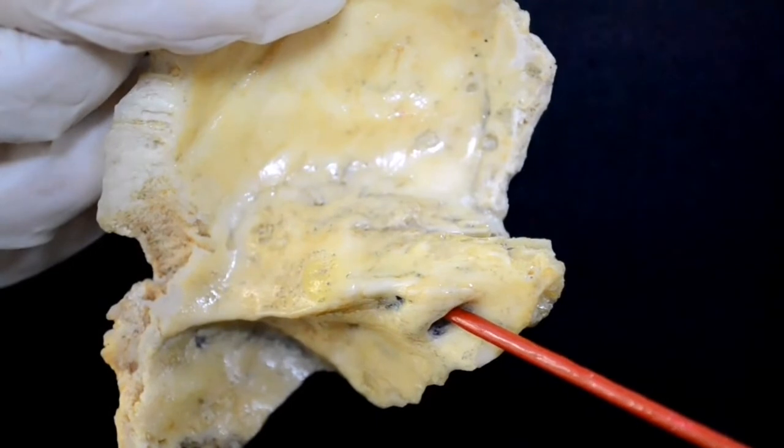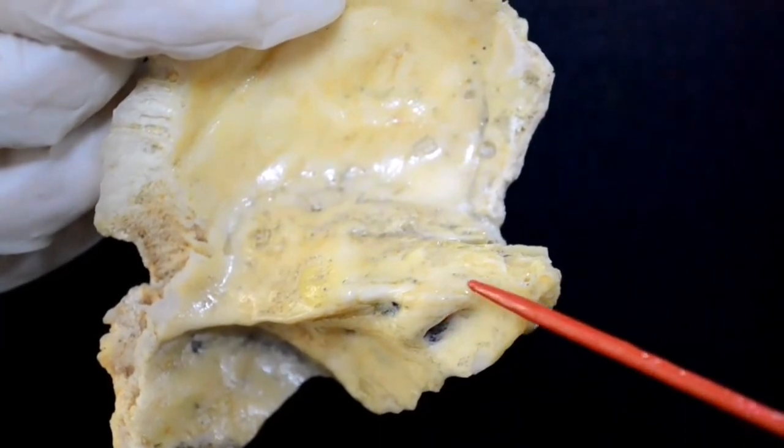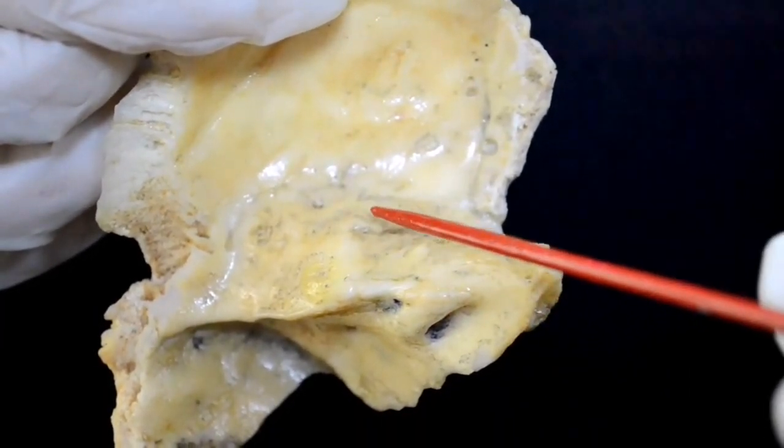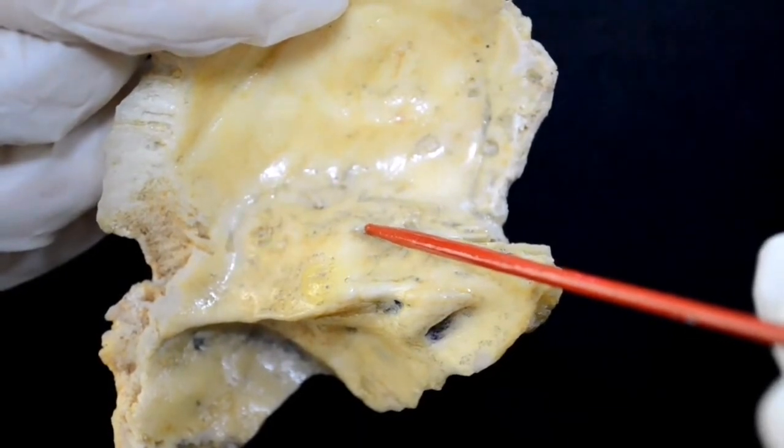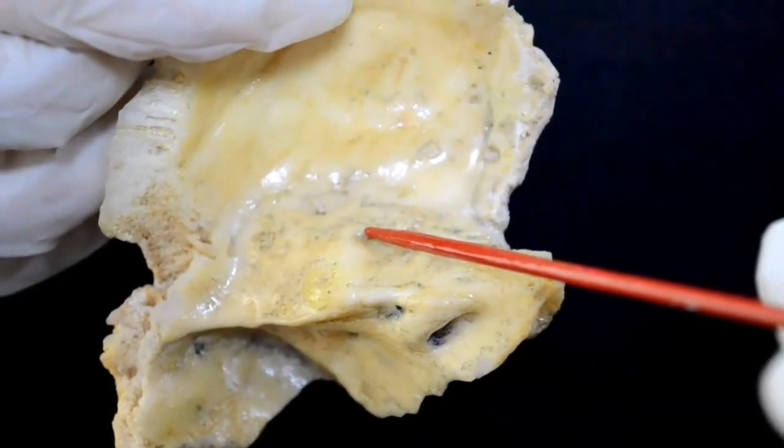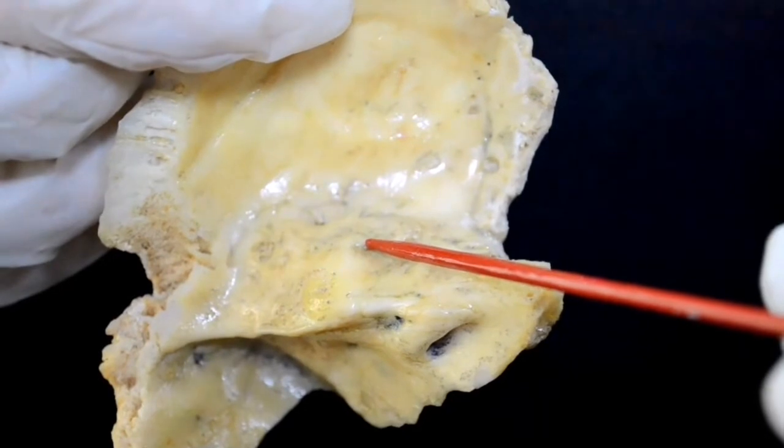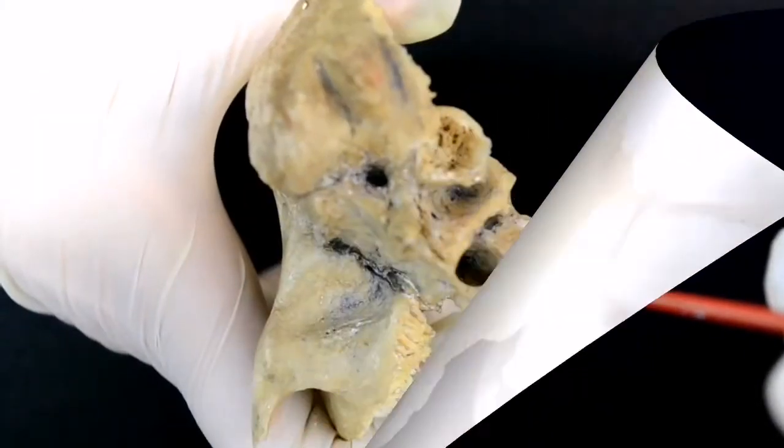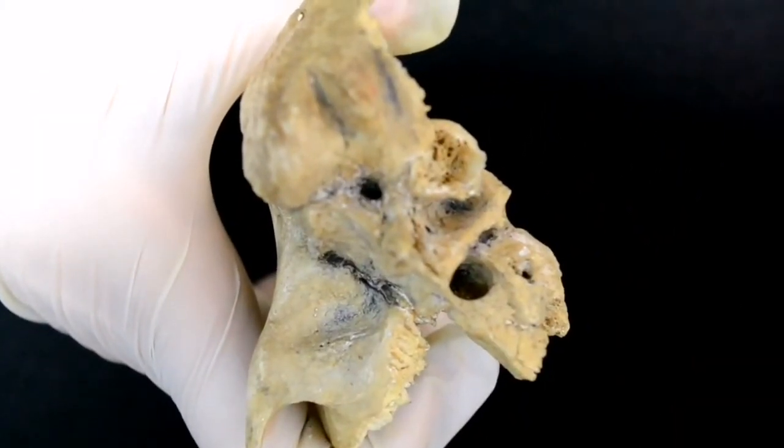Then it turns at a right angle to form the geniculum, just at the level of the hiatus canalis nervi petrosi majoris.